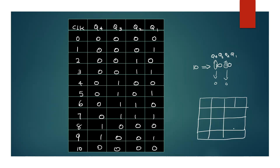We will plot the K-map. We will call Q4, Q3, Q2, Q1 — the four variables — and fill in the values: 0000, 0001, 0010, 0011, 0100, 0101, 0110, 0111, 1000, 1001, then don't-care states.